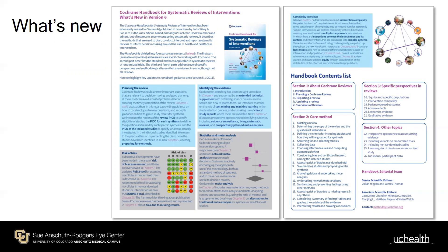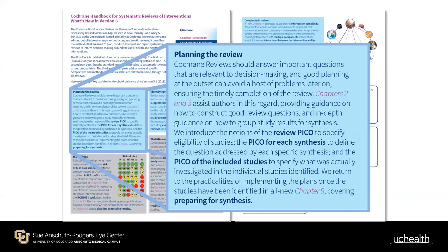On planning the review: what often surprises first-timers is that the PICO you plan at the start — Population, Intervention, Comparison, Outcome — is not necessarily the PICO you end up with in the final review, because you may not have evidence for some outcomes, or you may need to group interventions. For example, a drug may come in different dosages and frequencies and may compete with non-drug therapies, requiring decisions about grouping.